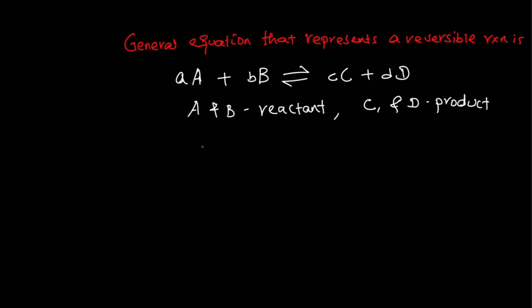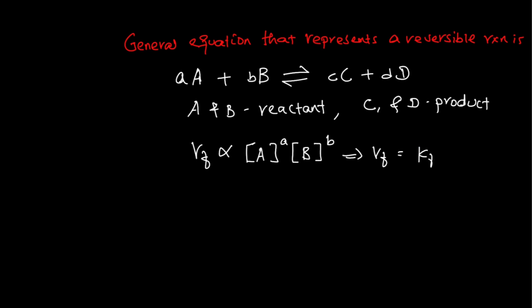By the law of mass action, the rate of forward reaction is directly proportional to the concentration of A raised to the power of small letter a, times the concentration of B raised to the power of small letter b. The rate of forward reaction equals the rate constant Kf times the concentration of A to the power of a, times the concentration of B to the power of b.